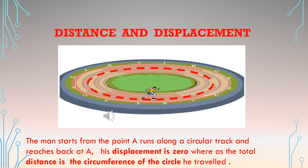Now consider the case of an object moving in a circular path. A man is running in a stadium on a circular track. He starts from point A, runs along the circular track, and reaches back at A. His displacement is 0 because he returns to the same position, whereas the total distance travelled is the circumference of the circle itself.